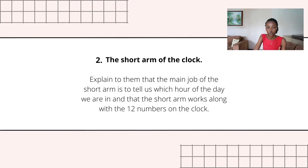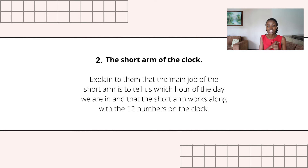The second part you're going to focus on is the short arm. Explain to your child that the main job of the short arm is to tell us which hour in the day we are in. In other words, if the short arm is on or right after the number four, this means we are in the fourth hour of the morning or evening.